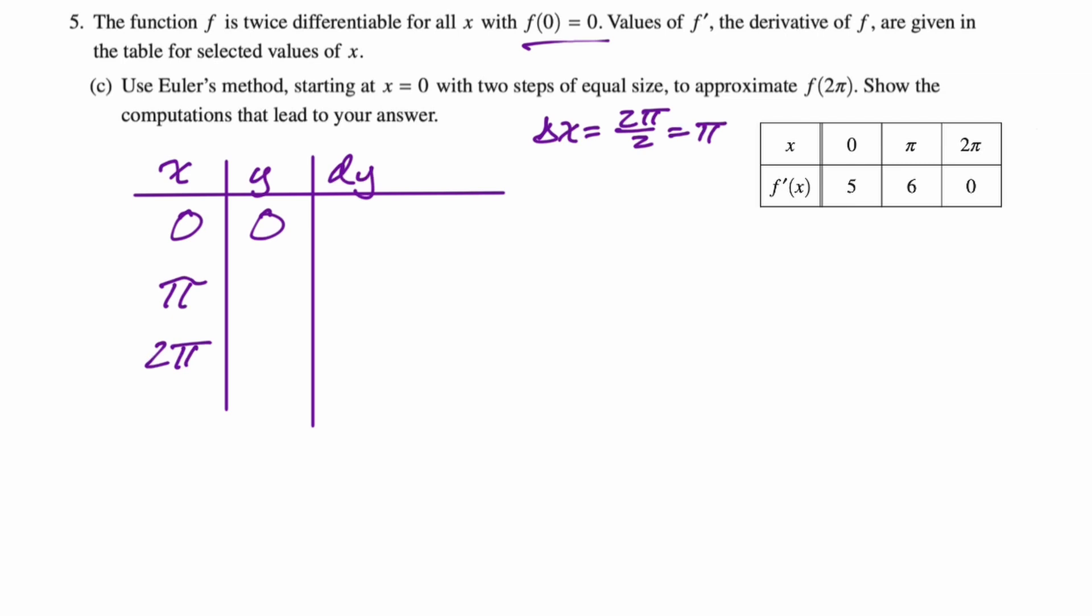Now to find dy, it's going to be delta x which is π times, in this case, f prime of 0. f prime of 0 is 5, so that's just 5π. So then we do the original y-coordinate which is 0 plus dy. So 0 plus 5π is 5π.